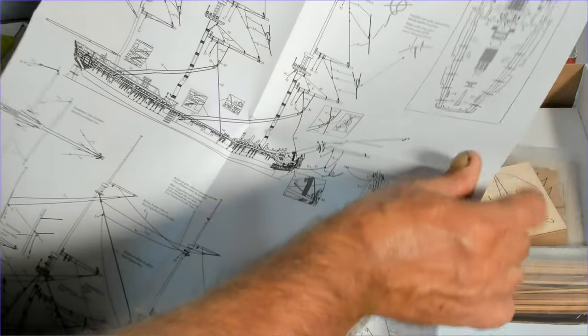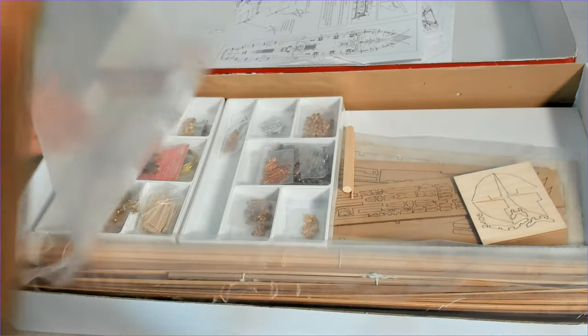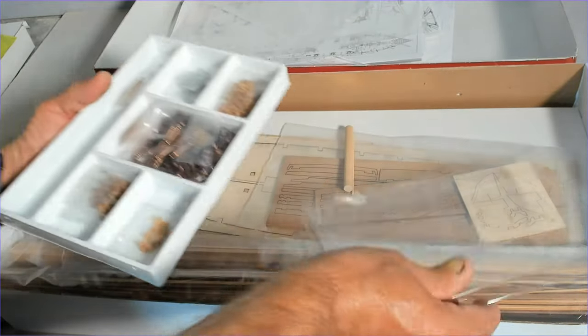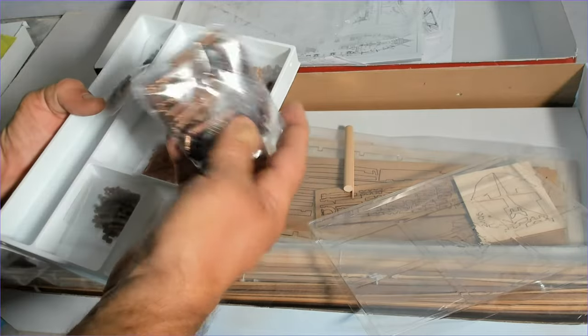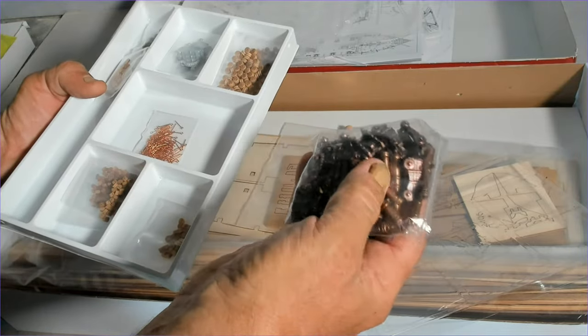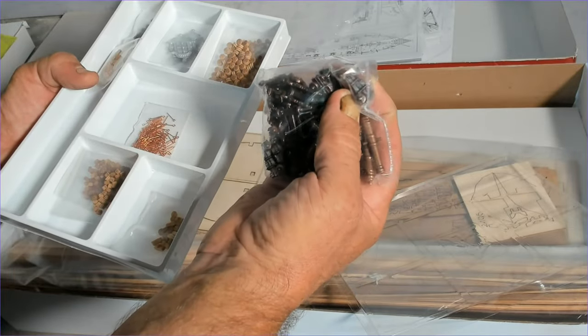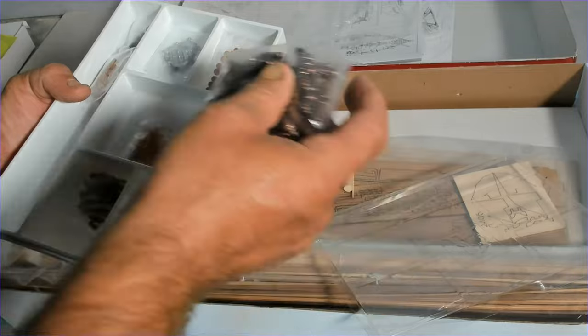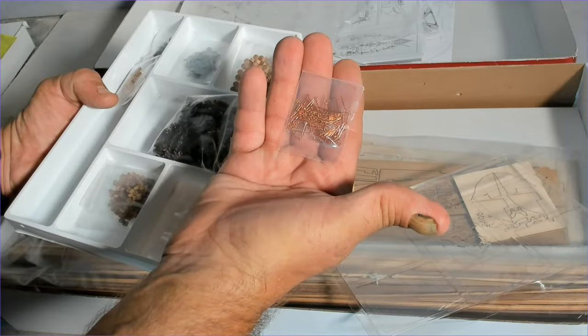A couple more trays. The cannons, and then as I said the cannon bodies which we will be replacing with the upgrade set. Got eyebolts, a number of blocks, single blocks, double blocks.